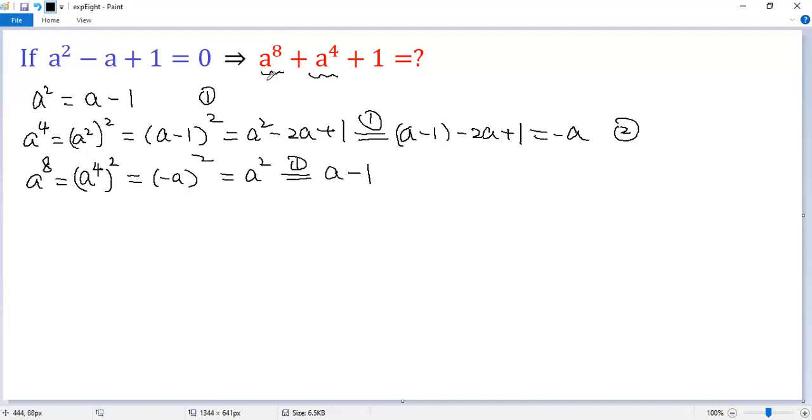Finally, we can find the value of the target. So A to the power of 8 plus A to the power of 4, plus 1. A to the power of 8 equals A minus 1. A to the power of 4 equals negative A and then plus 1.